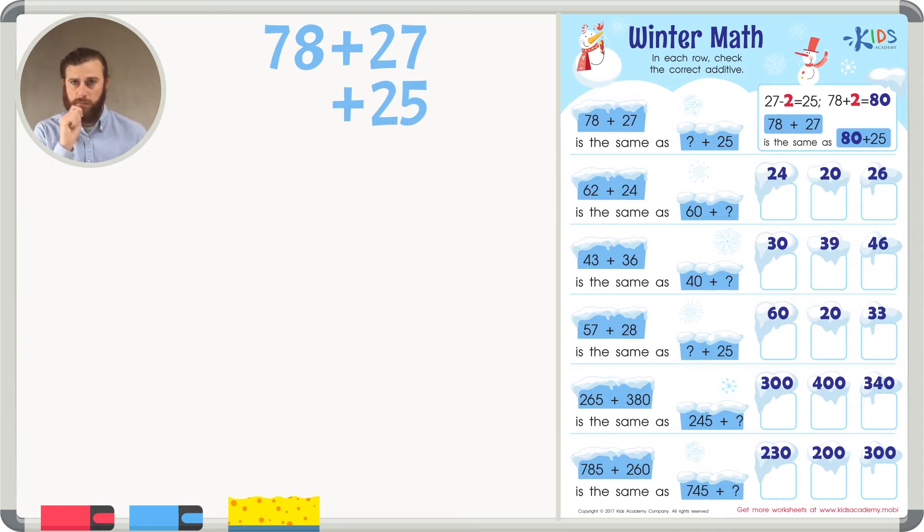We can count backwards to find out how many. We have 27, 26, 25. We took away 2. So if we did 27 minus 25, you'll see that it's a difference of 2.